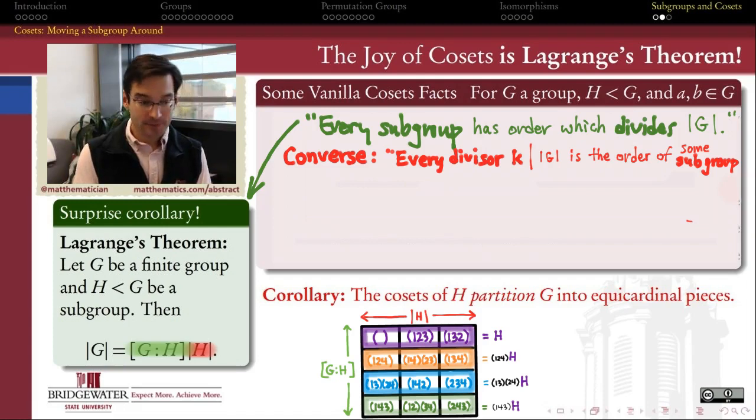For example, if you hand me a group of order 36, you might ask, is this group going to have a subgroup of order 18, or order 4, or order 2? Just being a divisor of the order of the group, does that guarantee that there exists a subgroup with that many elements?